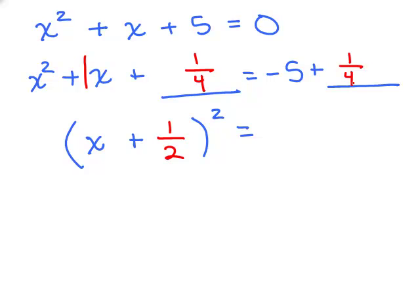Now you have to simplify negative five plus one-fourth. You need to get a common denominator. There's a lot of different ways people might do this. You could do this on scratch paper if you'd like. That would be negative twenty-fourths plus one-fourth, so you're going to get negative nineteen-fourths.